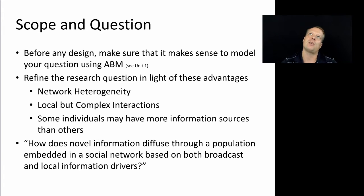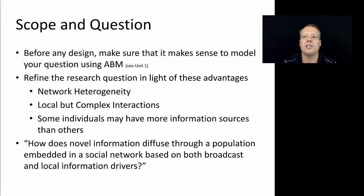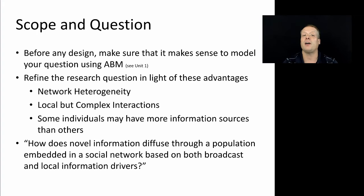If we think back to the information diffusion question and think about what aspects of it really allow agent-based modeling to shine — one of them is heterogeneity of individuals. Individuals in the diffusion question have heterogeneous positions within the overall social network, and that could be something we want to think about. Agents might also have local but complex interactions. In the BAS model, the decision to adopt or not adopt — once we move to a network context — is not based upon some aggregate-level statistics, but is based upon my local level of who has adopted, which is a local interaction that is potentially complex.